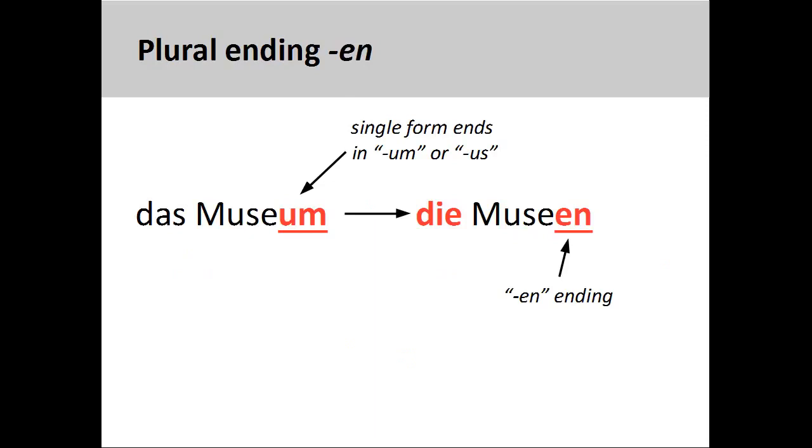Finally, it is important to note that words of Latin origin ending in -us or -um, such as Museum, museum, add -en in the plural, Museen.